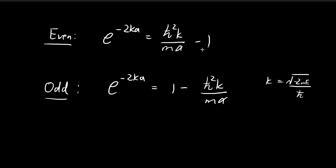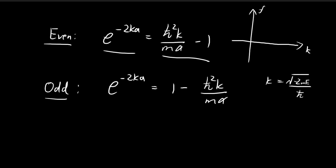For the case of the even function, there obviously always has a solution. If you graph the two separate functions — e to the power of negative 2ka, which decays, and a linear function with an intercept at negative 1 — you can see that no matter what, there will always be an intersection point. So for the even function case, we are guaranteed a solution, and the value of k corresponds to that intersection point.